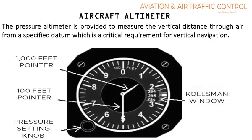The pressure altimeter display instrument has five essential parts: a dial which indicates altitude, a small needle which indicates 100 feet, a long needle which is a 1000 feet pointer, a pressure setting knob, and the Kohlsman window. The Kohlsman window is located at the 3 o'clock position on the altimeter dial and allows access to read a sub-dial which contains the barometric readings.